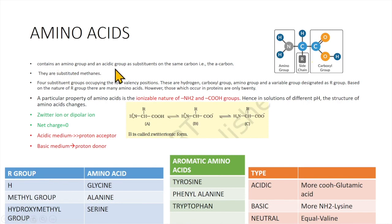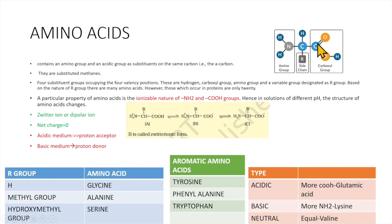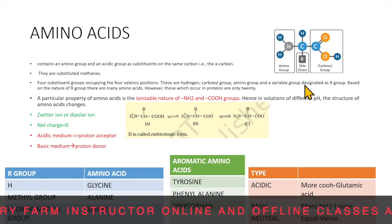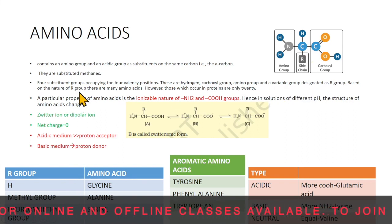An amino acid contains an amino group and an acid group as substituents on the same carbon atom — that is the alpha carbon atom. They are substituted methane. Methane is attached to one hydrogen atom, then R (which can be any side chain), then an NH2 amino group, and on the other side a carboxyl group. So carbon is tetravalent with four groups occupying its four valency positions: hydrogen, carboxyl group, amino group, and variable group designated as R group. Based on the nature of the R group, there are many amino acids.